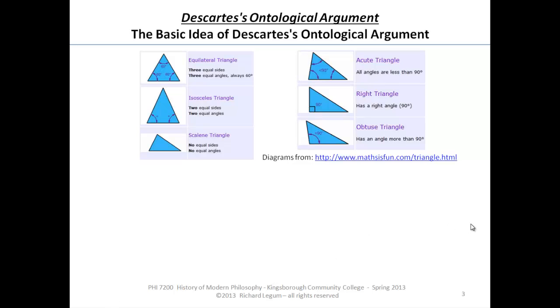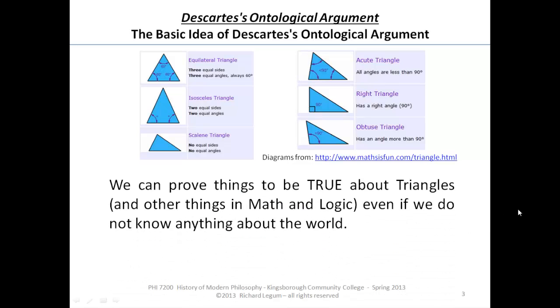But the interesting thing that we know about triangles is we can prove things true about the triangles and other things in math and logic even if we don't know anything about the world or the existing triangle. Even if we don't know what kind of triangle it is, we can still prove certain things about a triangle.